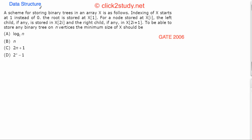We start the next problem. A scheme for storing binary trees in an array works as follows: the index of x starts at 1 instead of 0. The root is stored at the first index, and for any node stored at index i, the left child is stored at x[2i] and the right child is stored at x[2i+1].